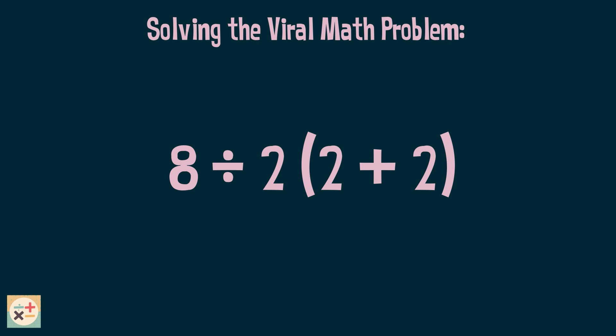First things first, let's have a look at the expression. We have 8 divided by 2 times 2 plus 2. 2 plus 2 is written inside the parentheses. And here we have an implied multiplication.